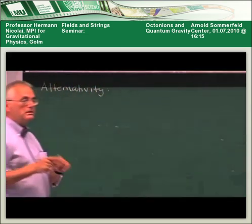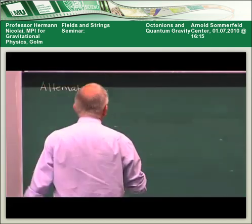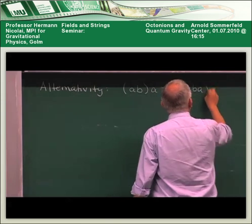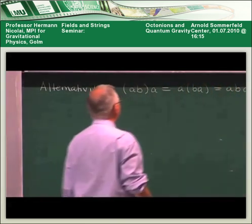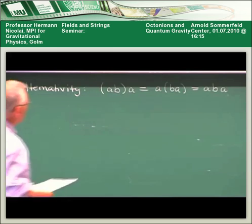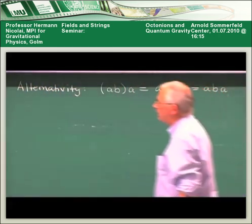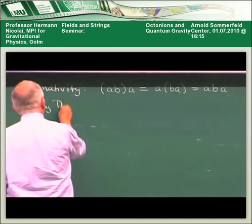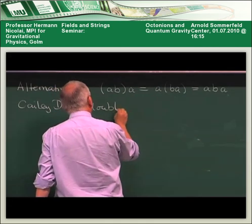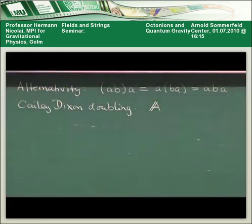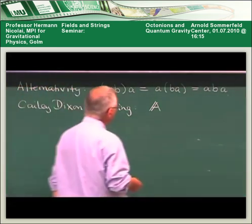Alternativity means that if you take any two octonions, they always define an associative subalgebra — so A·(A·B) = (A·A)·B and we can write it without parentheses. So what's the general pattern? How would you go on? Can I introduce further imaginary units? You can investigate this by means of what's called Cayley-Dixon doubling.